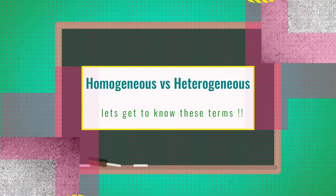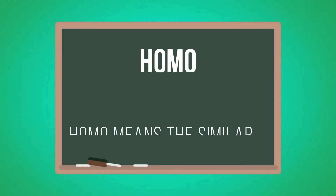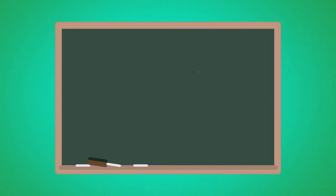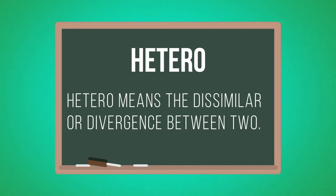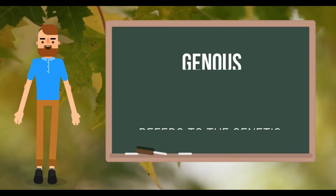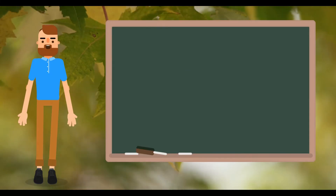First, let's be clear with the terms homo and hetero. Homo means similar or uniform between two, and hetero means dissimilar or diverse between two. Further, 'genous' refers to the genetic aspects of a population.